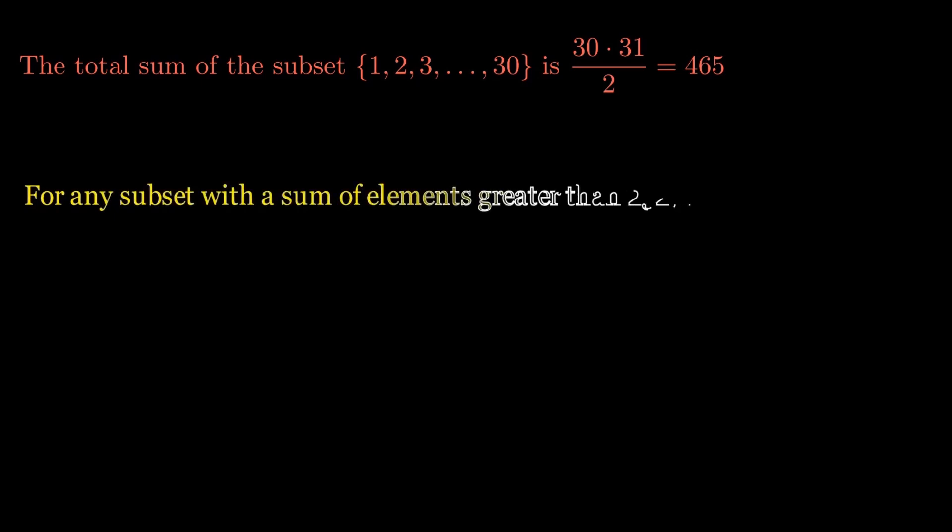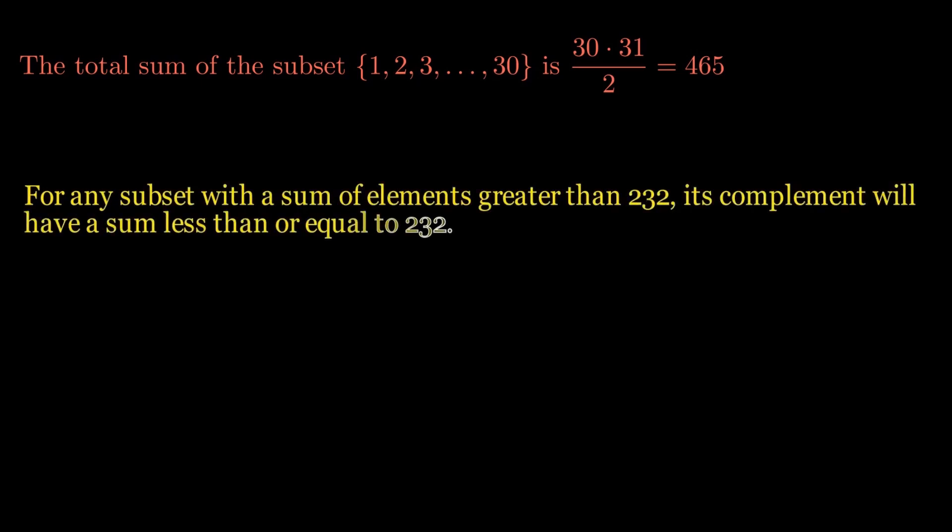This problem is relatively easy, so some of you might have already solved it. Here's the correct approach. The total sum of the set is 465. For any subset with a sum of elements greater than 232, its complement will have a sum less than or equal to 232.